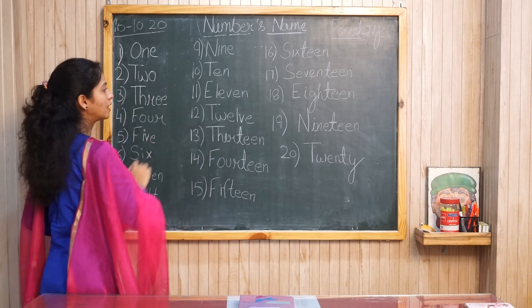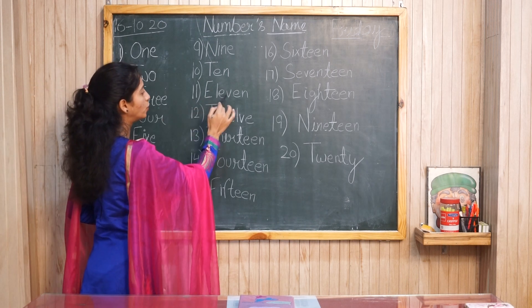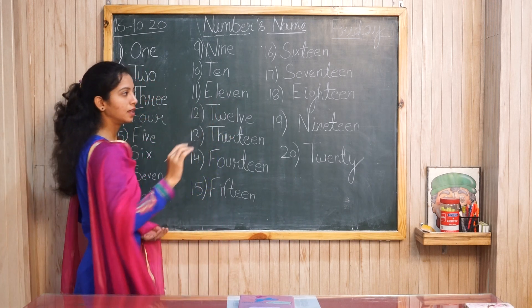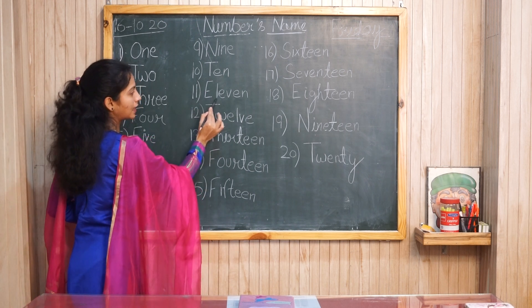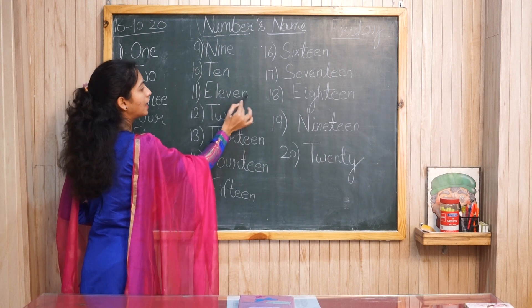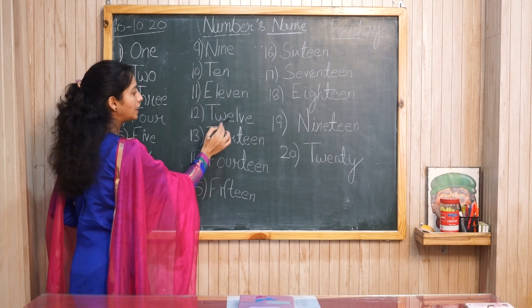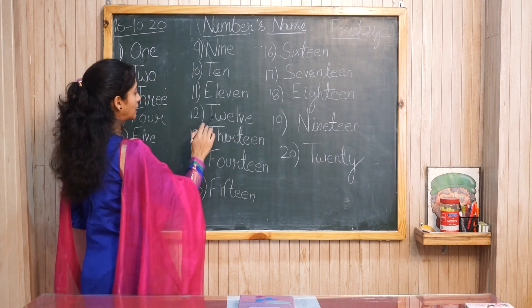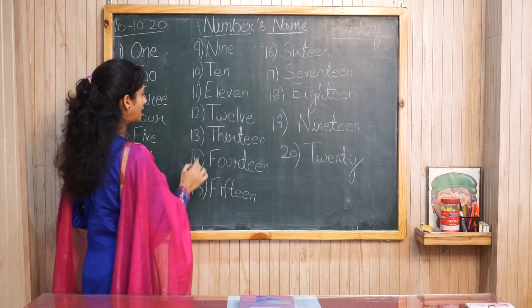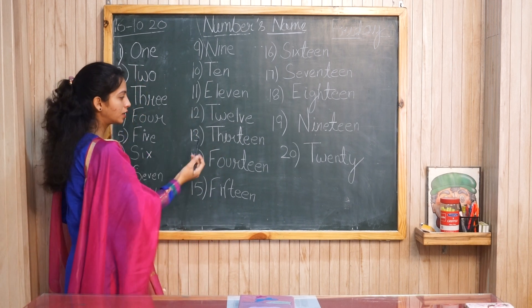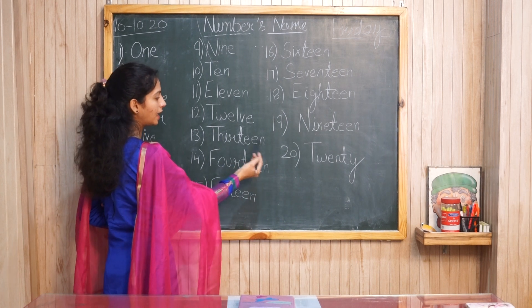Next spelling is 11 — Eleven: E-L-E-V-E-N. Twelve: T-W-E-L-V-E. Next is 13 — Thirteen: T-H-I-R-T-E-E-N.